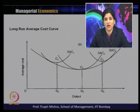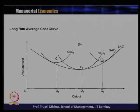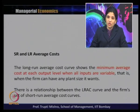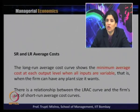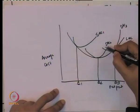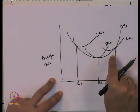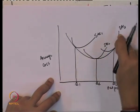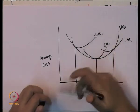The long run average cost curve shows the minimum average cost at each output level when inputs are variable — that is, when a firm can choose any plant size it wants. The long run average cost curve takes out the minimum average cost at each short run level of output, giving the minimum average cost at each output level when at least some inputs are variable.